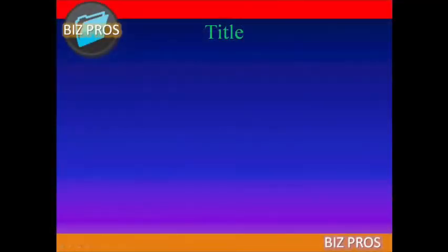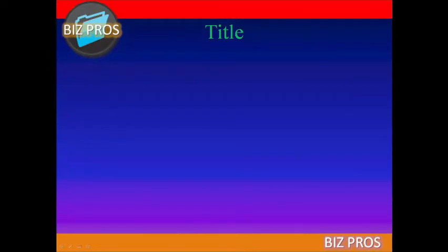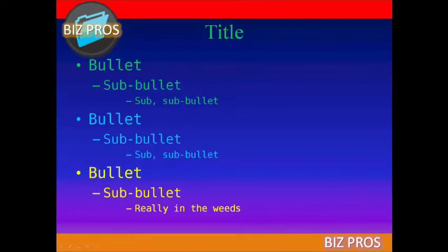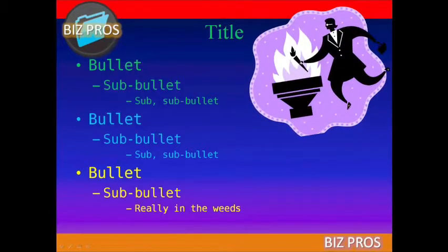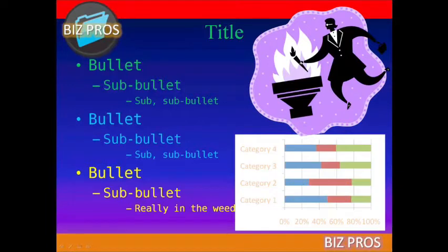For example, PowerPoint wants you to begin with a title and then add bullets — more bullets and even more bullets until you're really in the weeds. Of course there's empty space, so let's add some cheesy clip art, maybe a chart and, of course, a squiggly line. And there you have it: a really ugly slide that fails to tell a story.